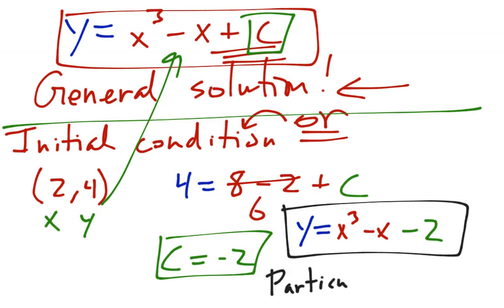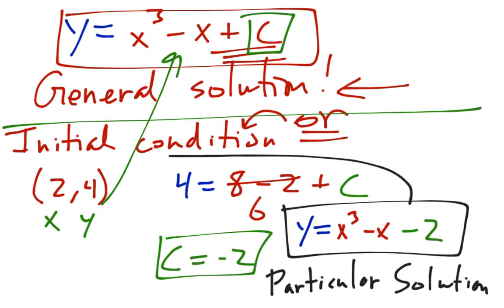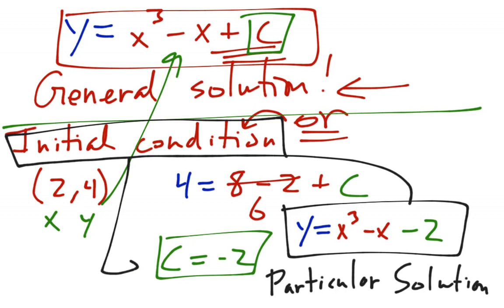This is no longer my general solution — this is called a particular solution. The particular solution is what you get when you have an initial condition. So if you have an initial condition and you end up solving for a value of c, you end up with what's called the particular solution. If a problem asks you for the particular solution, you need to find an initial condition somewhere in the problem.